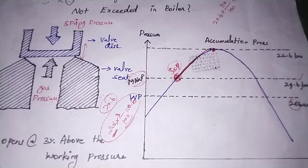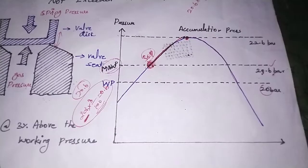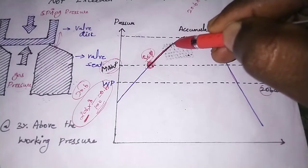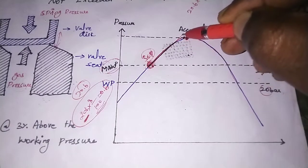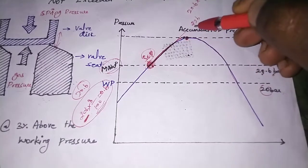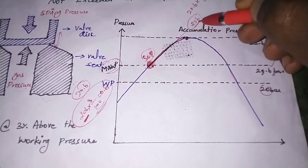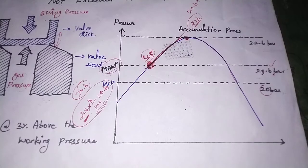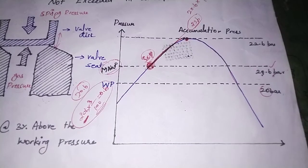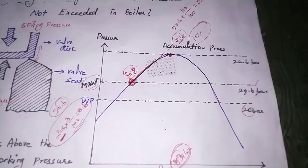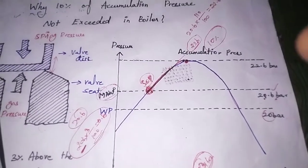If the boiler pressure rises above the accumulation pressure — for example, to 23 bar — the safety valve will be damaged. Before installing the safety valve into the boiler, it is subjected to an accumulation pressure test.